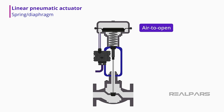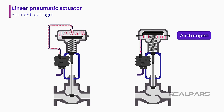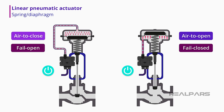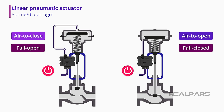In an air to open operating condition, the spring forces the valve closed. The air pressure on the diaphragm creates a force that overcomes the force of the spring and opens the valve. By rearranging the spring and pneumatic supply, this type of actuator can fail open or fail closed when air pressure is lost.